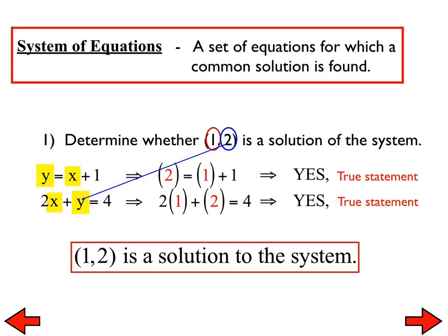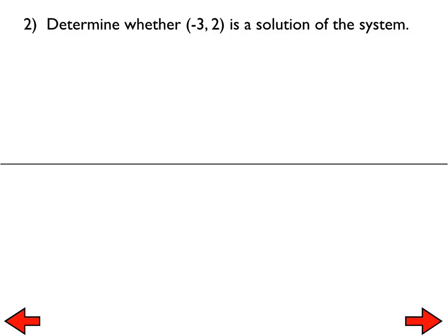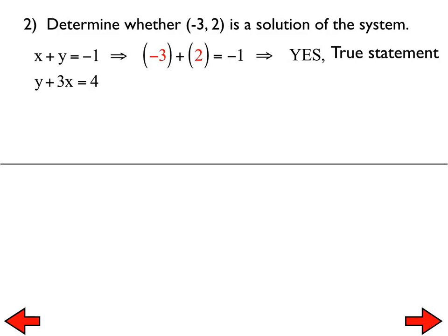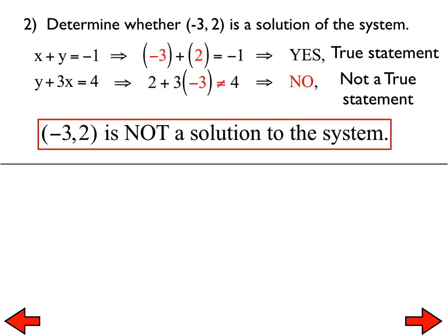I would like everybody to go ahead and do number 2 and number 3. Negative 3 comma 2 is not a solution to the system. So why is it not a solution? The first equation works, but when you plug in negative 3 and 2 into the second equation, it does not. Very good — that is exactly right. So negative 3 comma 2 is not a solution to that system.